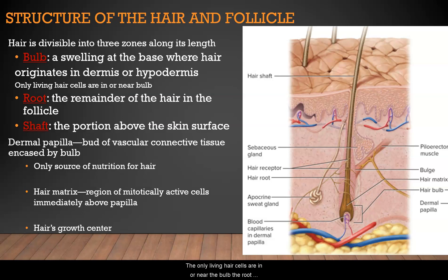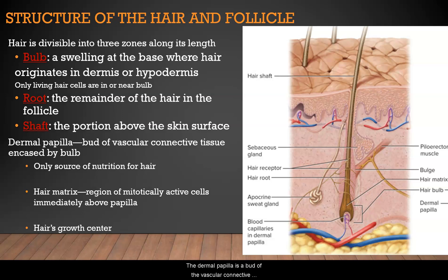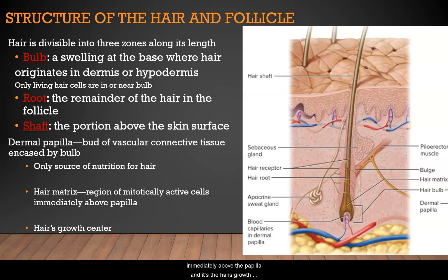Hair is divisible into three zones along its length. The bulb is a swelling at the base where hair originates in the dermis or hypodermis — the only living hair cells are in or near the bulb. The root is the remainder of the hair in the follicle, and the shaft is the portion above the skin surface that you actually see. The dermal papilla is a bud of vascular connective tissue encased by the bulb and the only source of nutrition for the hair. The hair matrix, immediately above the papilla, is the region of mitotically active cells and the hair's growth center.